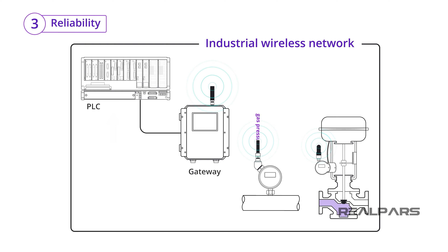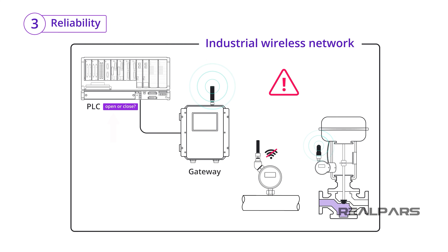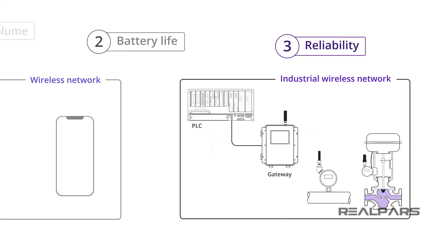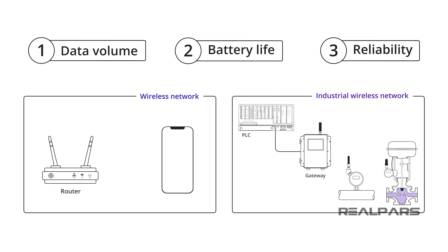Interruptions in wireless communication in a strategic industrial environment such as a power plant or an oil refinery can result in process upsets, which could lead to more serious consequences. That is why the reliability and accuracy of data in an industrial wireless system are critical, and in most cases there is little room for errors or interruption of data communication. To recap, there are three main differences between a typical wireless network such as Wi-Fi and an industrial wireless network such as IIoT.